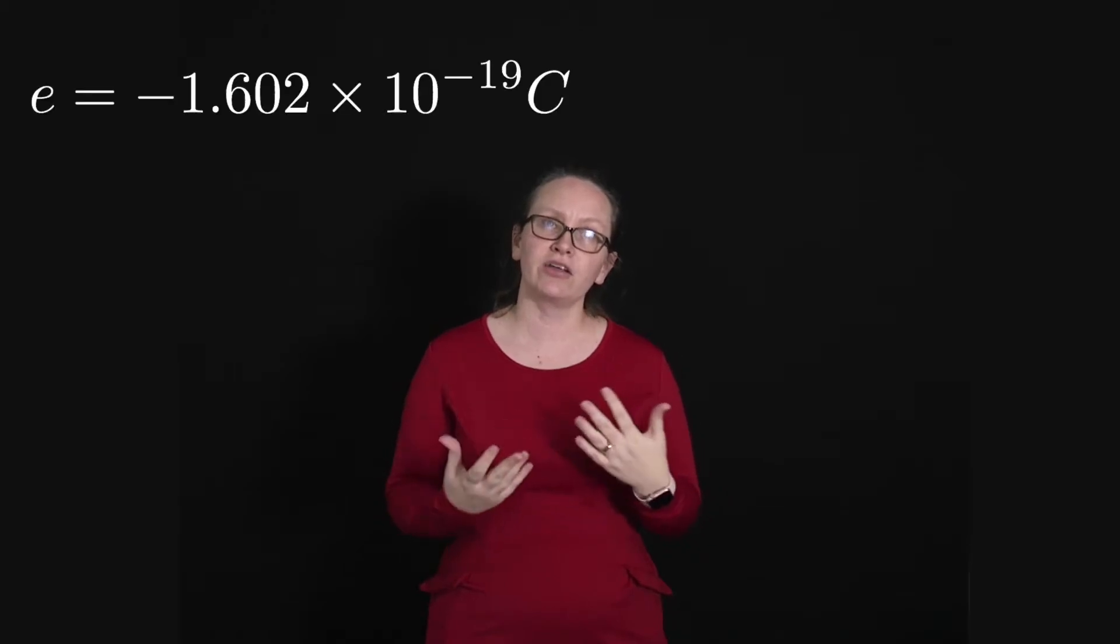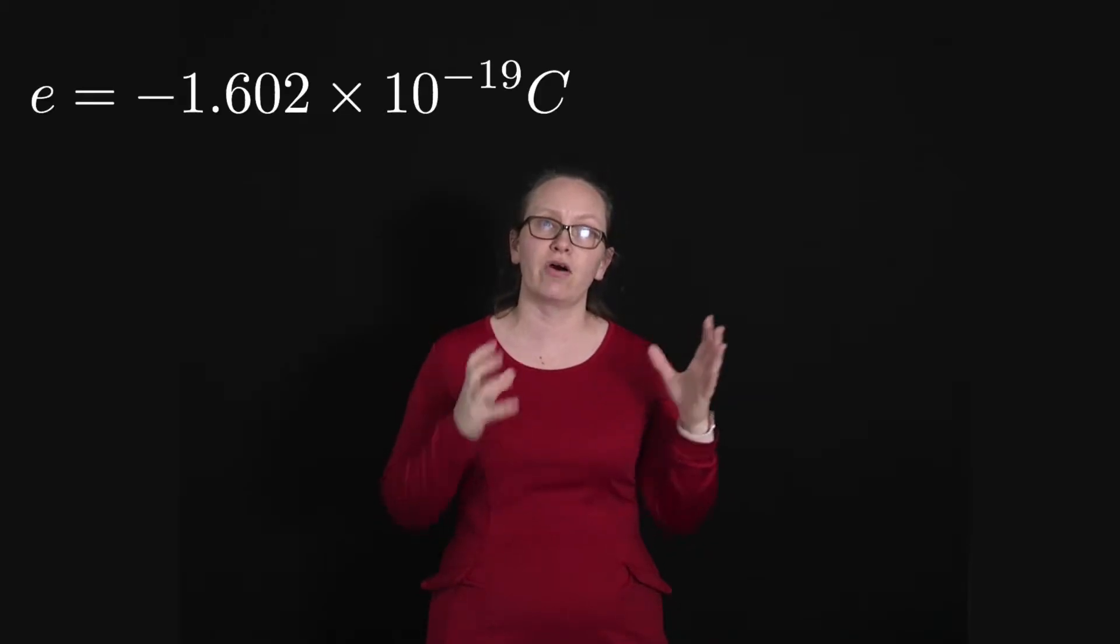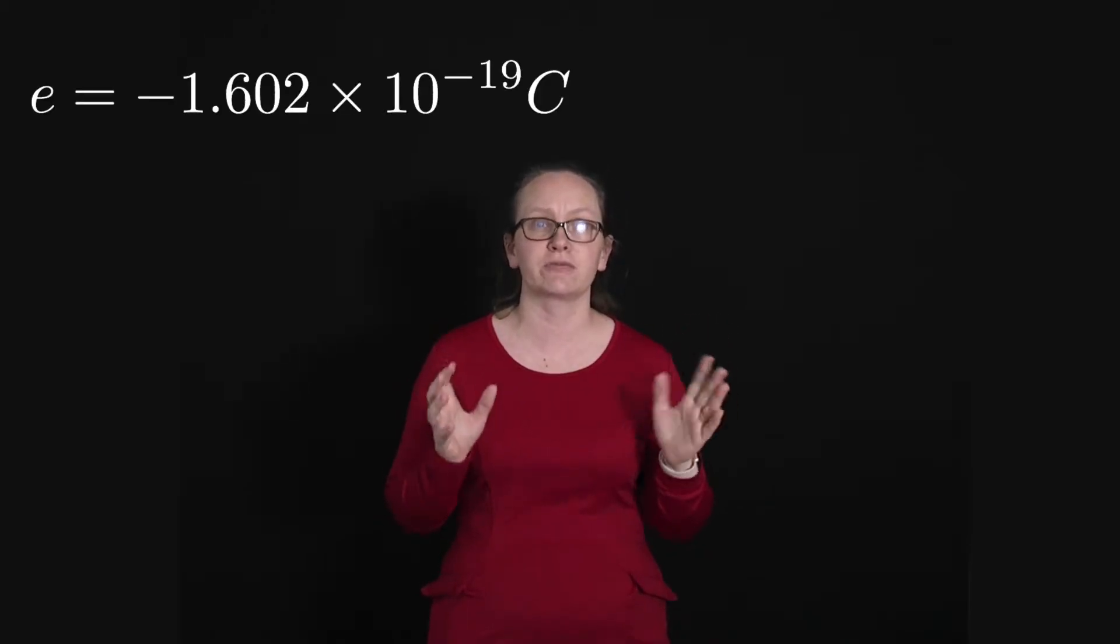Now you've also been learning about charge. Charge is also quantized. If we want to charge something up, we give it a certain number of electrons or we take those electrons away if we want it to become positive. So charge is always an integer multiple of the charge on an electron, which is 1.602 times 10 to the minus 19 coulombs.